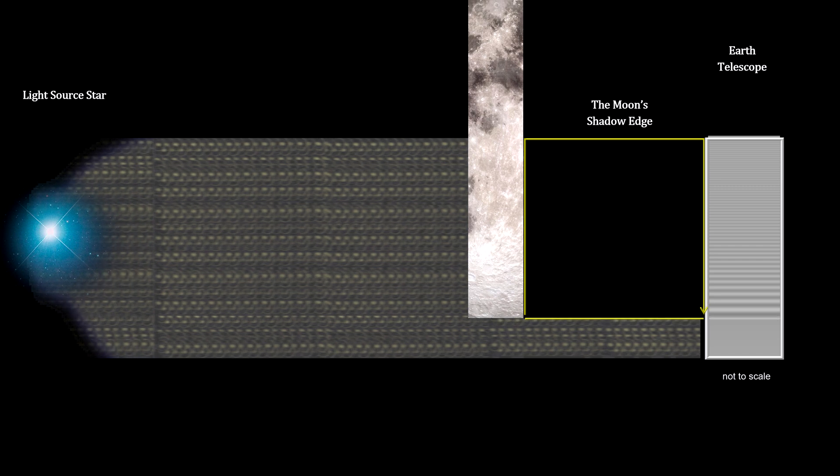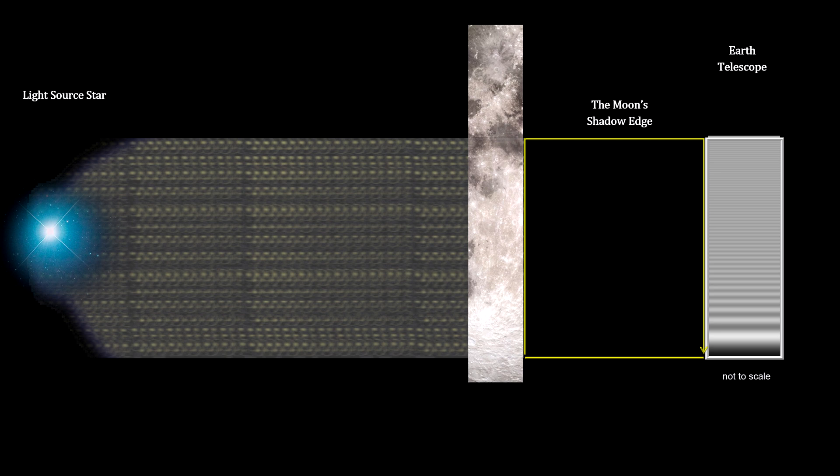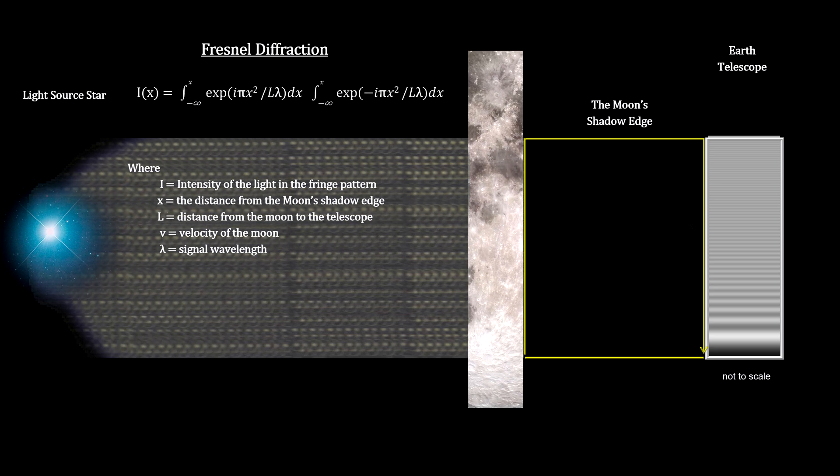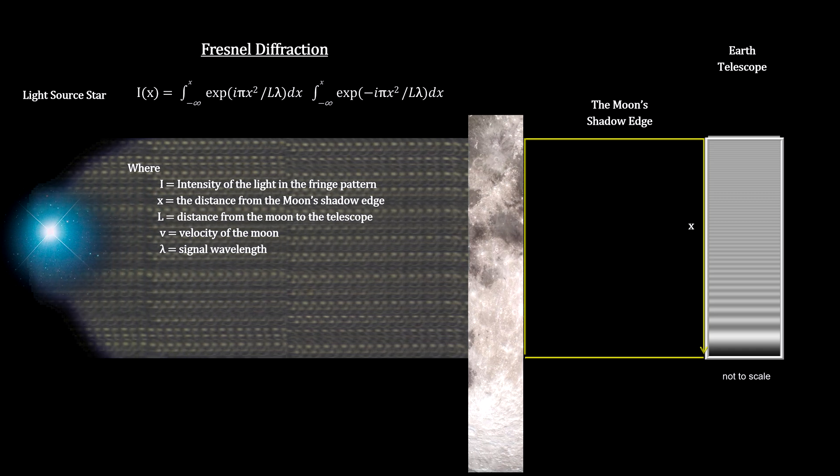A diffraction pattern develops on the radio telescope that provides additional information about the source. The optics are described by the French physicist Augustin Fresnel's equation, developed in the early 1800s.